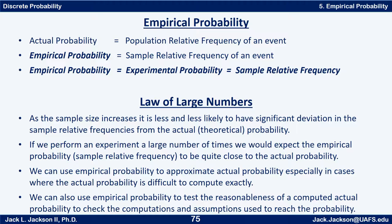We can use empirical probability to approximate actual probability, especially in cases where the actual probability is difficult to compute exactly. We can also use empirical probability to test the reasonableness of a computed actual probability — to check the computations and assumptions used to reach that probability.